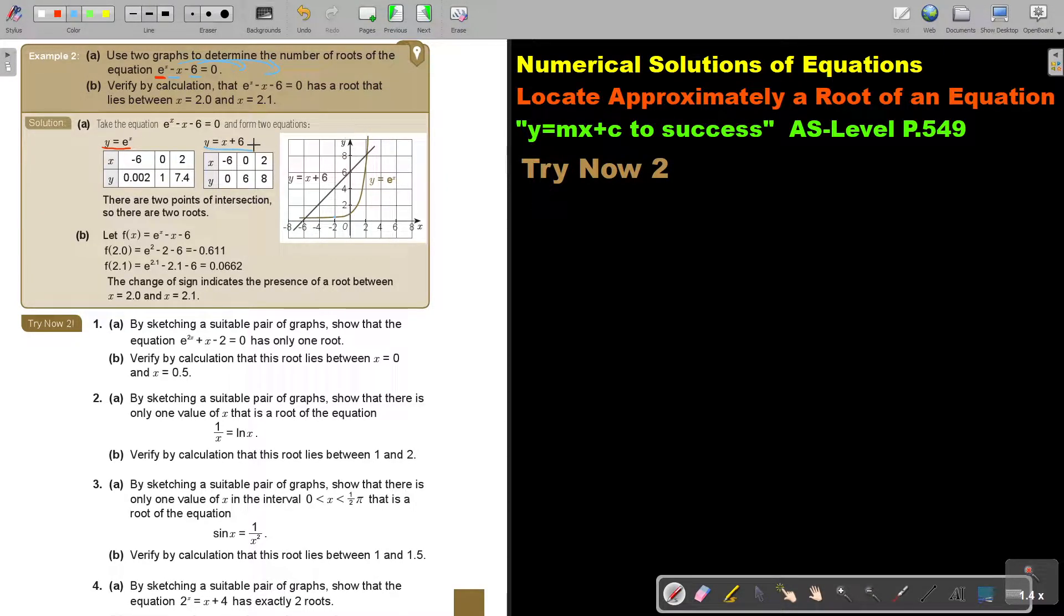So maybe it's best to first get that one and see where it cuts, and then you know up to where you must do that one. So there are two points of intersection, so there are two roots. And then verify by calculation that this has a root between 2 and 2.1.